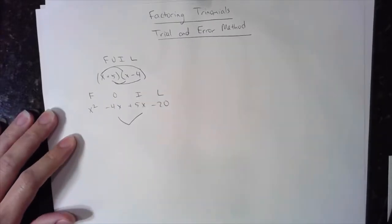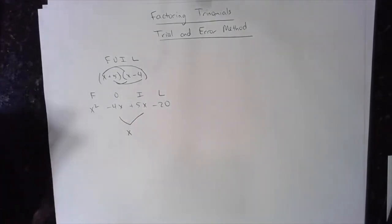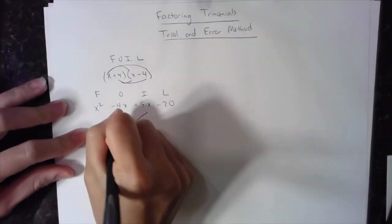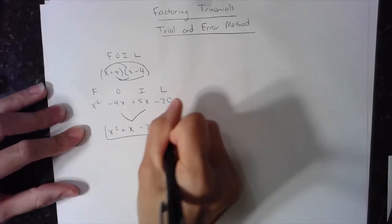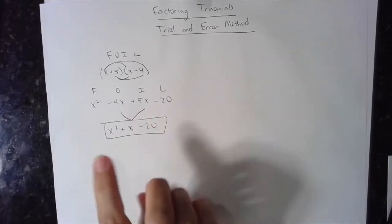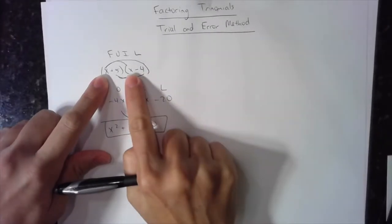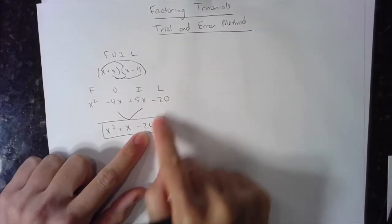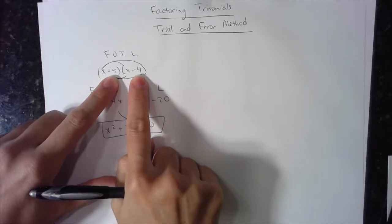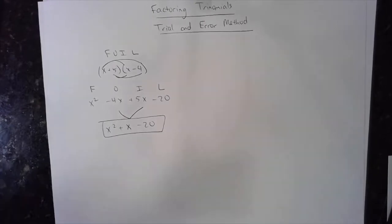The outer and inner portions combine to give the middle term — in this case positive x. The first part of FOIL stays and the last part of FOIL stays to create the trinomial's three terms. The x squared comes from multiplying the first two pieces, the last term comes from multiplying the last two numbers, and the middle term comes from the outer and inner parts of FOIL combining.